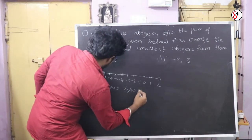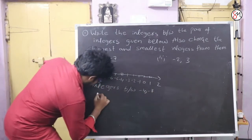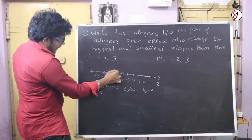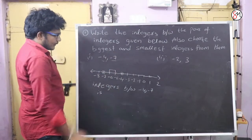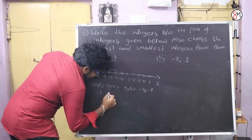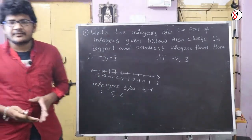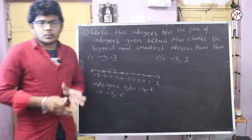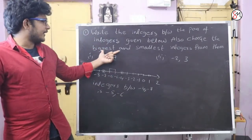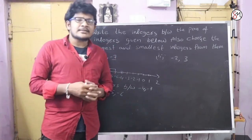Integers between minus 4 and minus 7. So the integers between minus 4 and minus 7 are: minus 5, minus 6. Biggest and smallest: when dealing with minus terms, the number with the smaller absolute value is bigger. So minus 5 is bigger than minus 6.